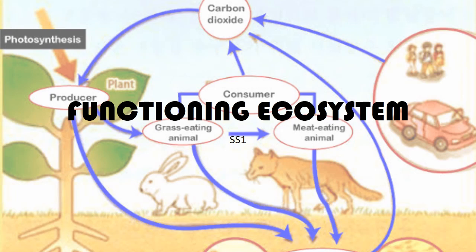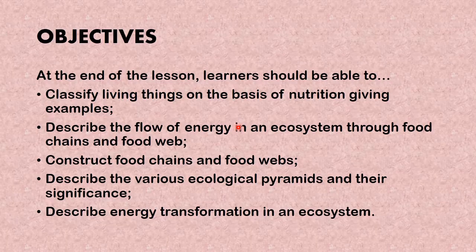Hello, it's time for another lesson in ecology. This time around we'll be looking at functioning ecosystems. The objectives for this lesson are that learners will be able to classify living things on the basis of nutrition, giving examples, describe the flow of energy in an ecosystem through food chains and food webs, construct food chains and food webs, describe the various ecological pyramids and their significance, and describe energy transformation in an ecosystem.